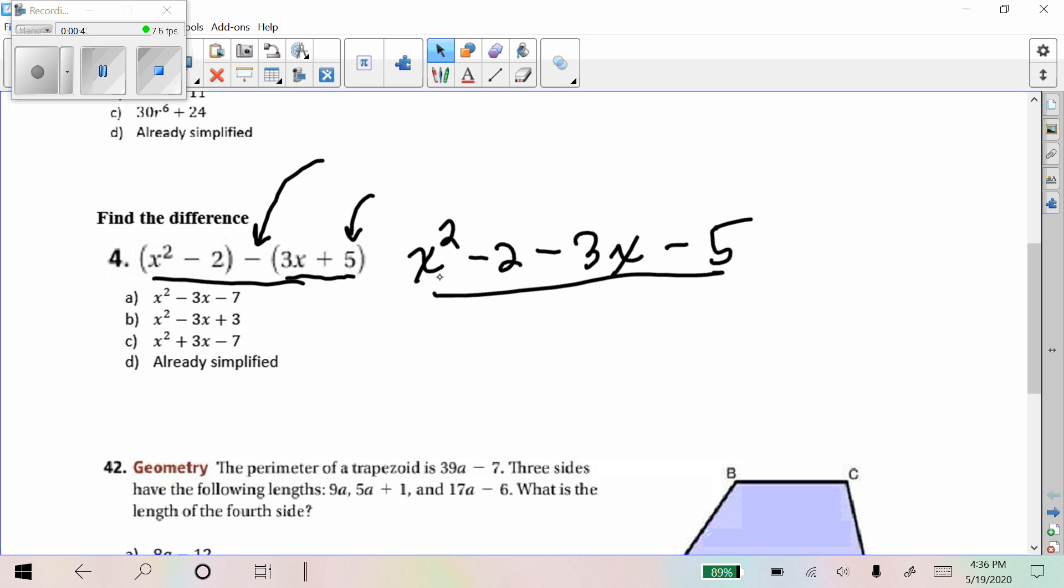Now, one way you can remember that is if there is no number there, you can put a one there. You can distribute a negative one and that would ensure that you make this a negative five. Anyway, now that I simplify this, I get x squared minus two and the minus five makes minus seven. So the correct answer would have been A for that one.